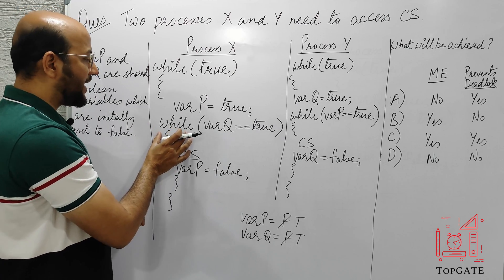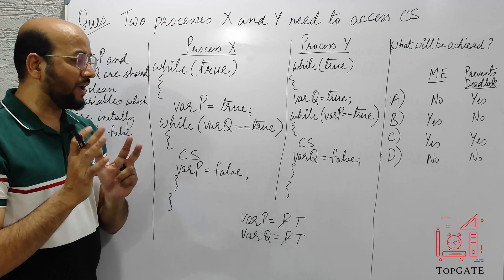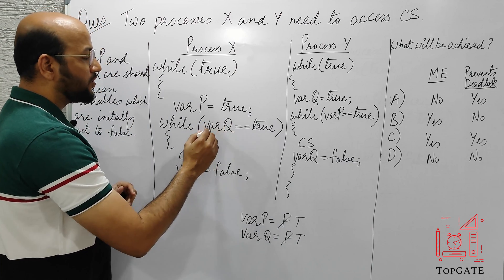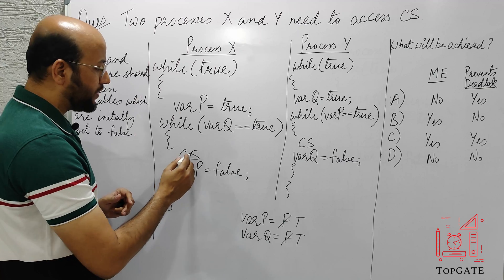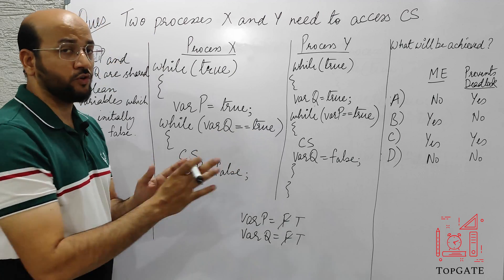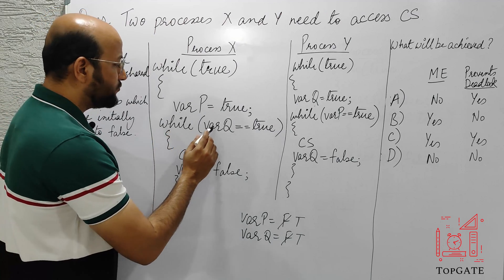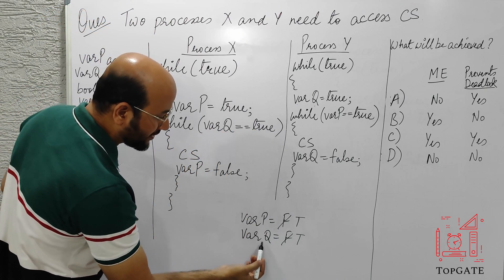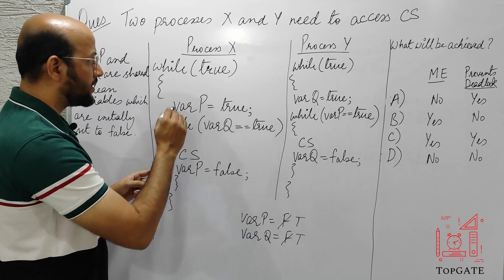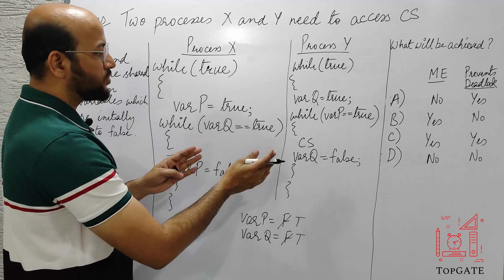Process X executes: while(Q == true). It checks whether the value of Q is true. Since Q is currently true, the condition is true, so it goes inside the while loop and enters the critical section. Process X is now executing in the critical section. After a context switch, we come to process Y.